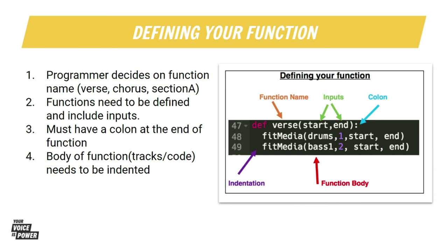Look at the example function. All functions need to be defined and include inputs. You will need to place a colon at the end of your function and then indent your tracks below the function. You have the function name — verse — two inputs, a start and end, and a colon. Then you are going to use the start and end where we used our beginning measure and our end measure. I will do another video that will show you how to do this.